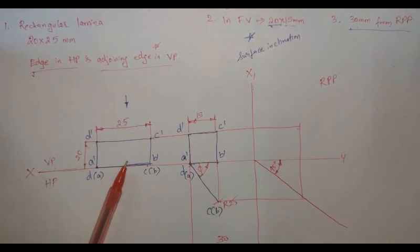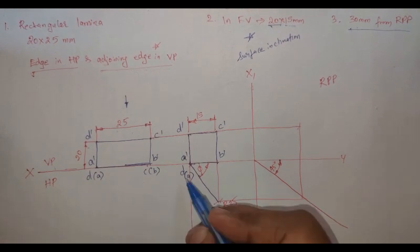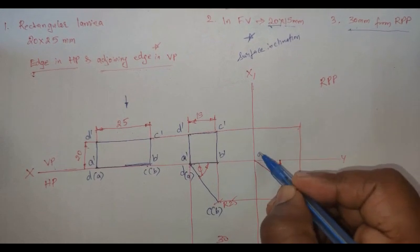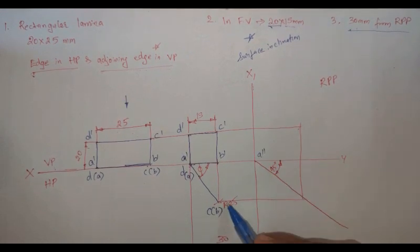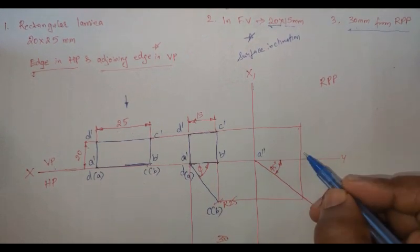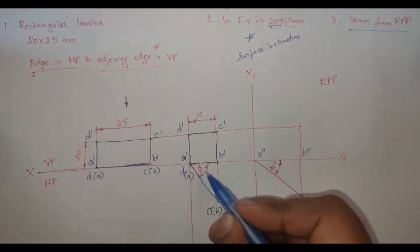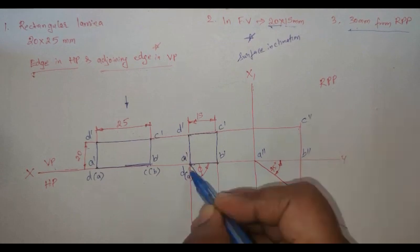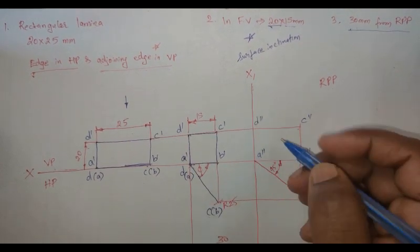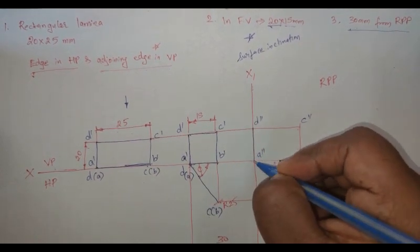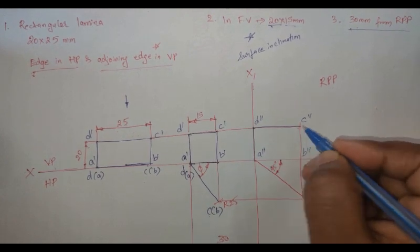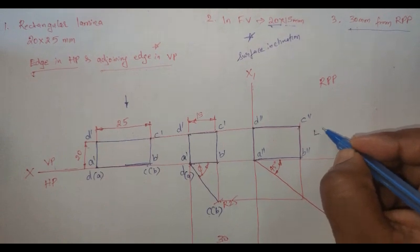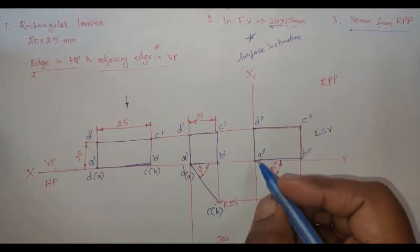Then project it, then do notation by notation. A is here, A' is there, so here you're going to keep it A''. It is in RPP. B is there at 45°, B''. C at 45°, C', C''. D, D''. Let's join A' to B' to C' to D'. This is nothing but the left side view.